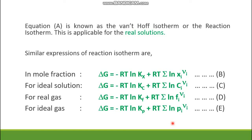For other systems, similar isotherms are obtained. For an ideal gas, it becomes ΔG = −RT ln Kp + RT Σ ln(Pi^νi). For a real gas, Kf is used with fugacities fi^νi. For ideal solutions, concentration terms give ΔG = −RT ln Kc + RT Σ ln(Ci^νi). For mole fractions, ΔG = −RT ln Kx + RT Σ ln(Xi^νi). These give equations B, C, D, and E — all are reaction isotherms or Van't Hoff isotherms.